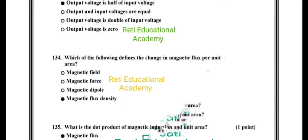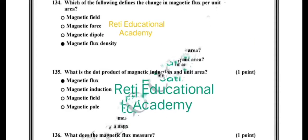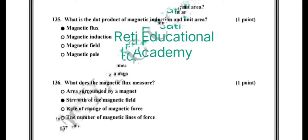Question number 134: which of the following defines the change in magnetic flux per unit area? The correct option is magnetic flux density. Question number 135: what is the dot product of magnetic induction and unit area? The correct option is magnetic flux. Question number 136: what does the magnetic flux measure? The correct answer is it measures the strength of the magnetic field.